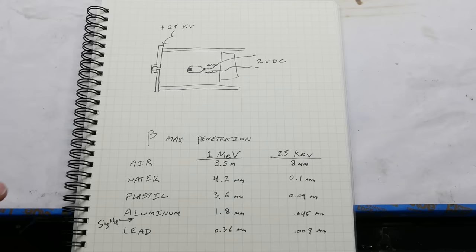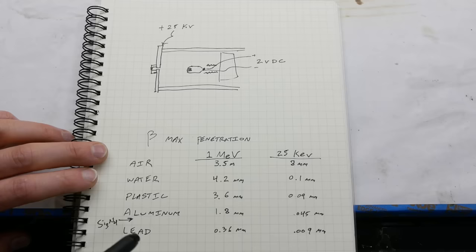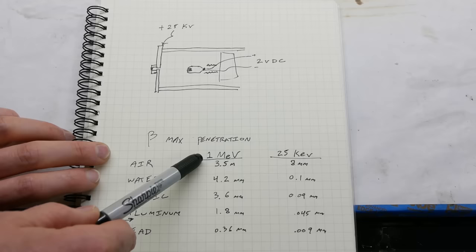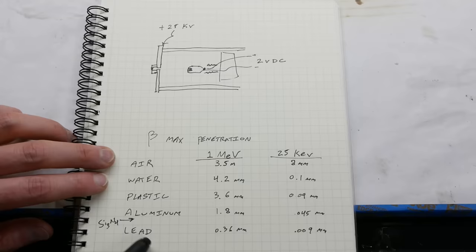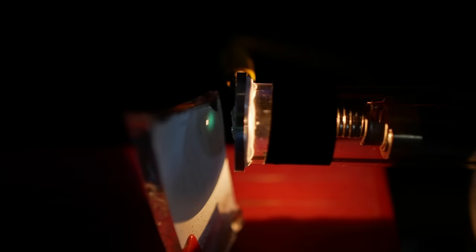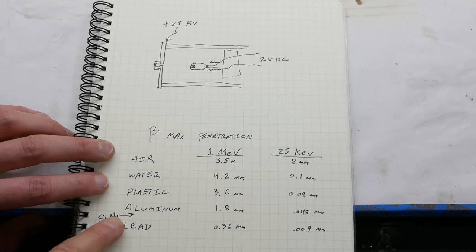Here's a couple rules of thumb to get an idea of what materials will do to an electron beam. If we had a one mega electron volt beam, which is relatively high power, the distance that electrons will travel in air is about 3.5 meters, and in water about 4.2 millimeters, and so on for some other materials here. But today we're working at 25 kilo electron volts, and so in air the distance is about 8 millimeters, which actually agrees almost perfectly with the experimental results that I got.